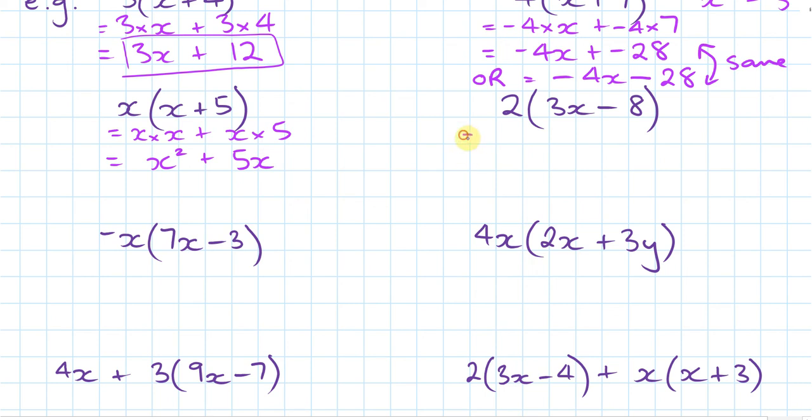Next example: 2 times 3x, 2 times 3x minus 2 times 8. Simplifying now, I get 2 times 3x is 6x minus 2 times 8 is 16.